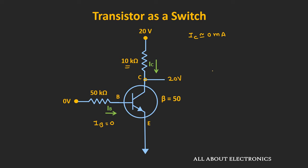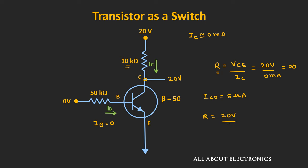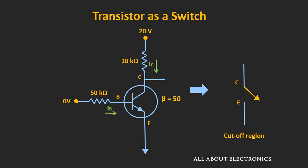During the cutoff region of operation, if we see the value of the resistance between the collector and the emitter terminal, then it is equal to voltage Vce divided by Ic. In this case, it will be equal to 20V divided by 0mA, that is equal to infinite. So ideally, when the transistor is operating in the cutoff region, the value of this resistance will be equal to infinite — or we can say it will act as an open circuit. But actually, due to the reverse saturation current, the value of this resistance R will be very high. If the value of this reverse saturation current is equal to 5μA, then the value of R will be equal to 20V divided by 5μA, that is equal to 4MΩ. So during the cutoff region of operation, the resistance offered by the transistor will be very high, and the transistor will act as an open circuit.